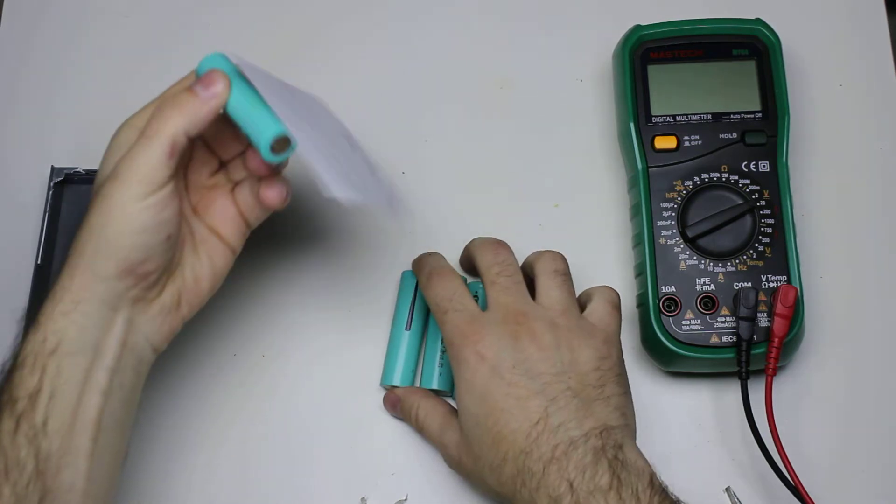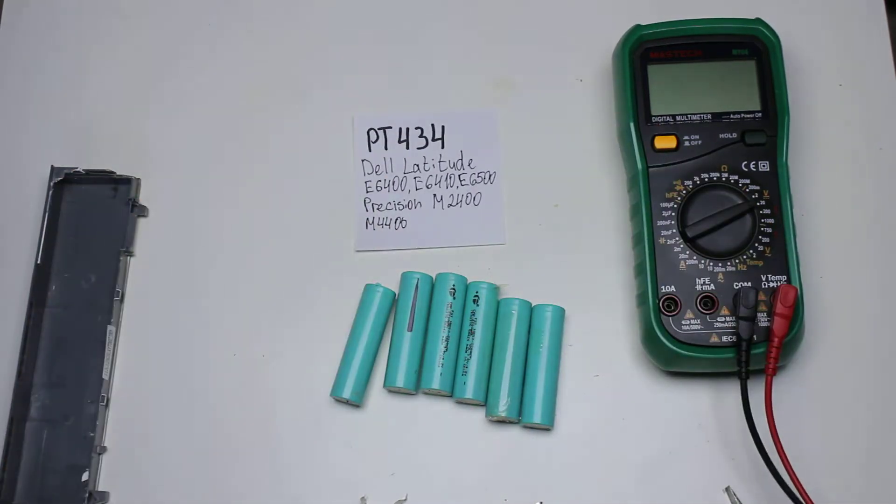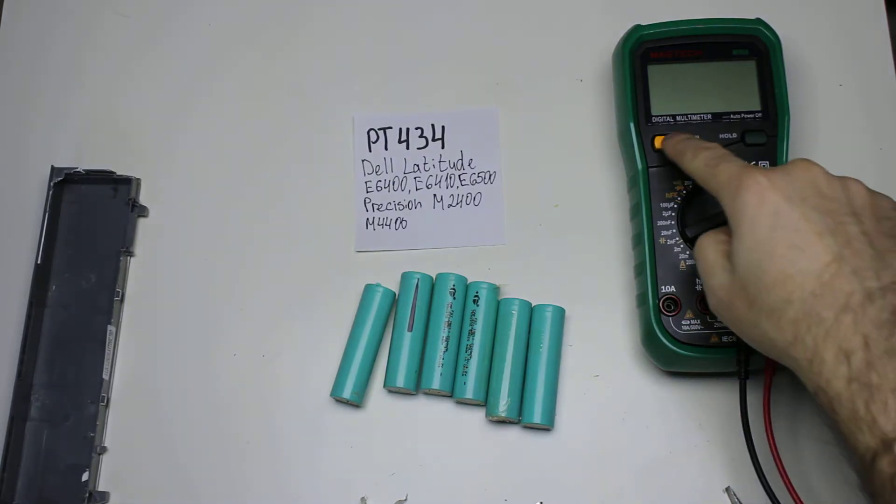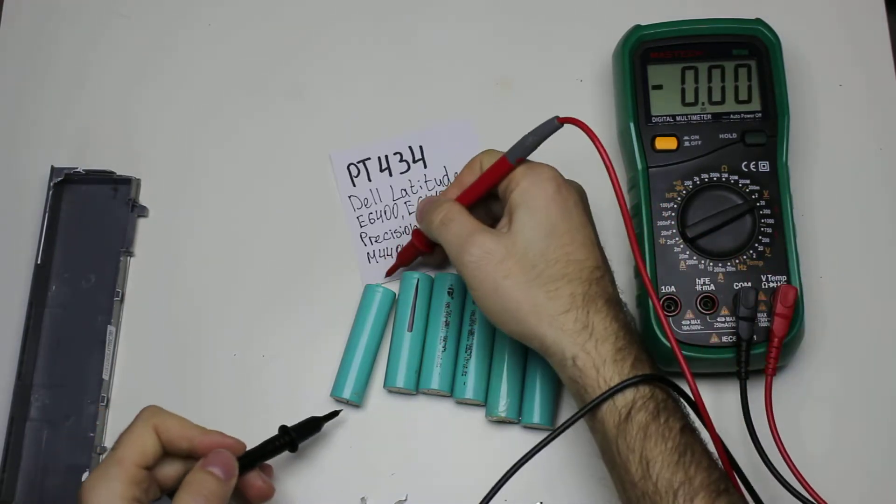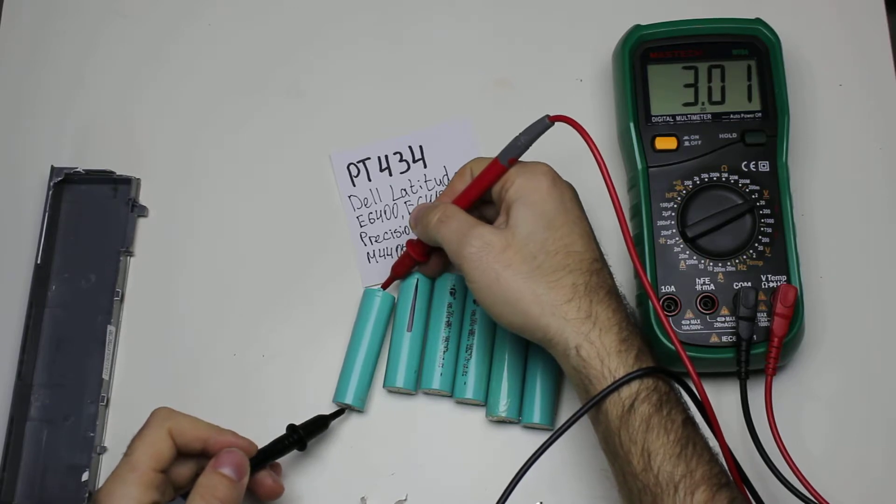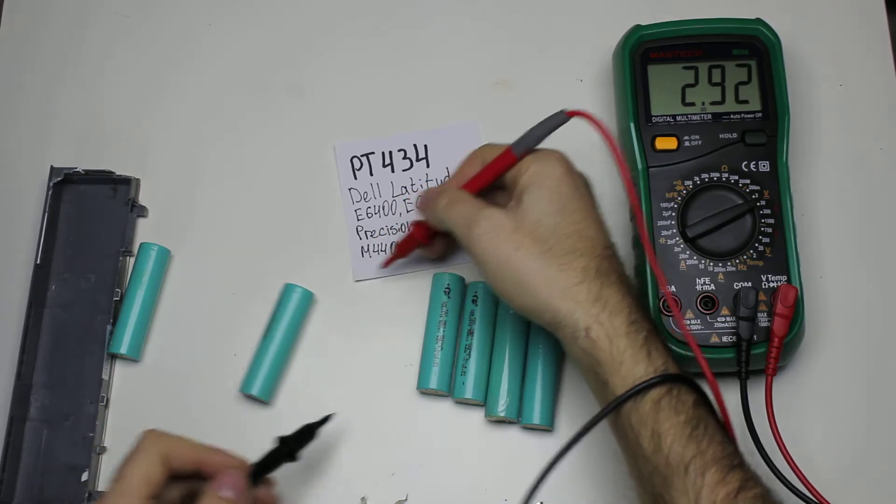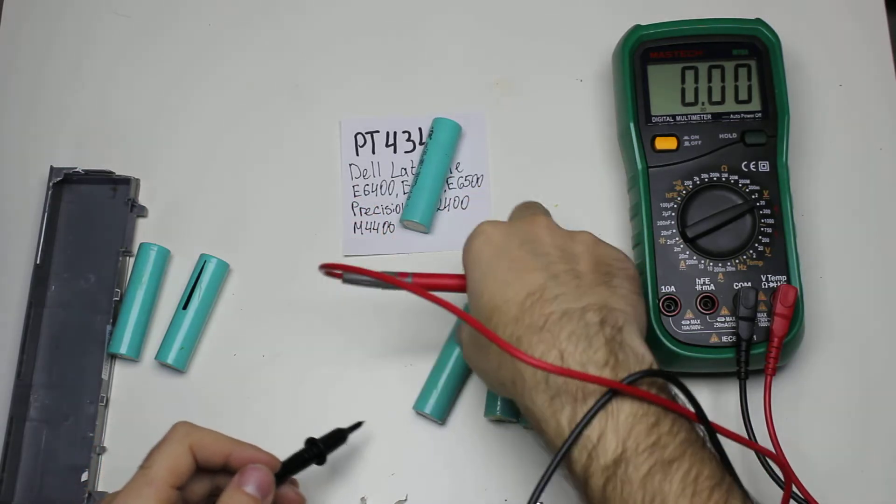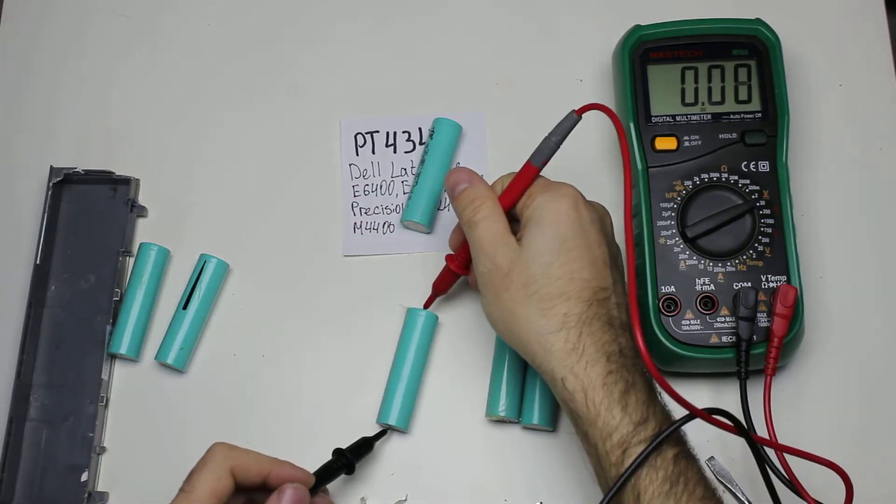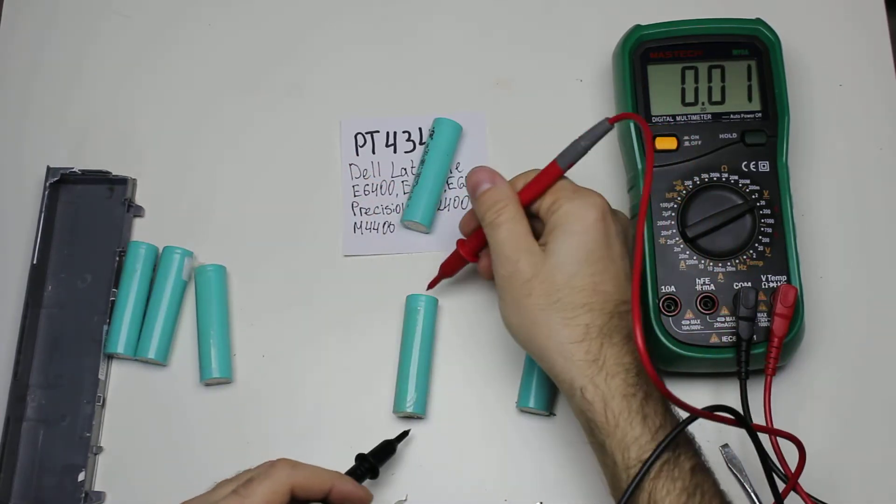Okay, this one's good, this one is okay. This one was marked as PT434 battery along with maybe 10 different numbers. Let's see - this one is somewhat okay, this one needs checking. I think the three-volt ones should be fine so I can test them in the charger.